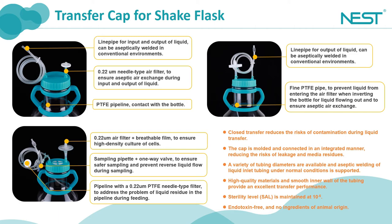Meanwhile, the sampling tubing is equipped with a needle filter. Screw the syringe into the needle filter to inject the liquid remaining in the tubing after feeding back into the flask to reduce waste.